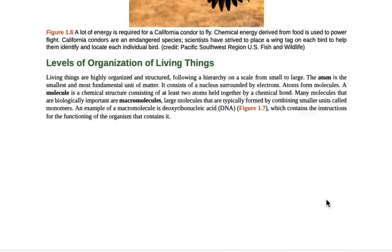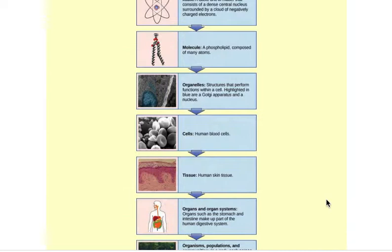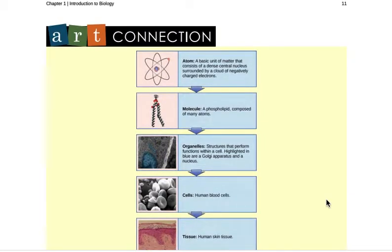The next thing that I want you to really focus on is to look at the levels of organization in your textbook. So the smallest level of organization is an atom.